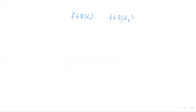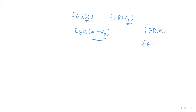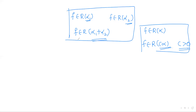In this video we discussed two properties. First: if f is Riemann-Stieltjes integrable with respect to α₁ and with respect to α₂, then f is RS-integrable with respect to α₁ + α₂. Second: if f is RS-integrable with respect to α, then f is RS-integrable with respect to any scalar multiple cα, provided c is positive. Thank you.